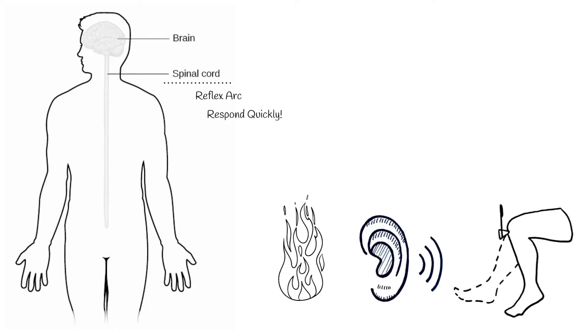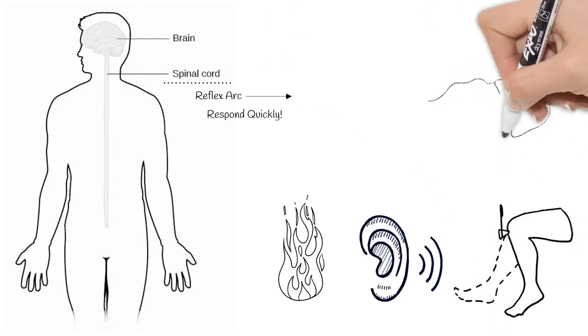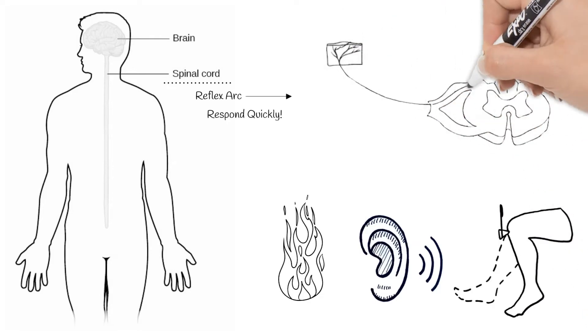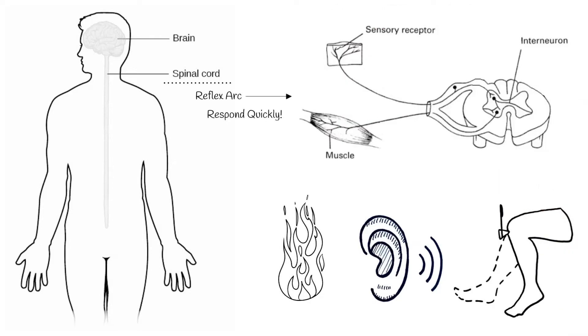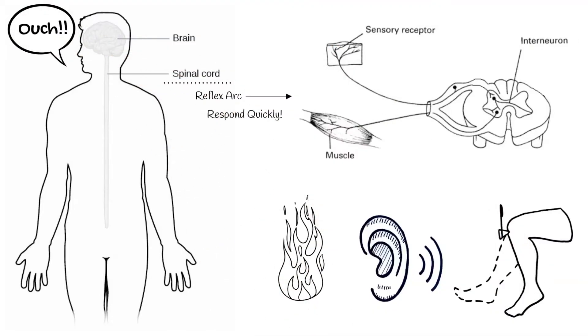The message still goes to your brain to see if more needs to be done. But your reflex happens first as it goes through the spinal cord and is so fast. Often when you pull your hand off something hot, you feel the pain afterwards once it's gotten to your brain and it processes the pain.